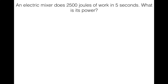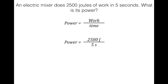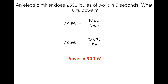Let's do a practice problem: You have an electric mixer that does 2,500 joules of work in five seconds — what is its power? Formula: P = W / t. Substitute: P = 2,500 J ÷ 5 s. The power is 500 watts. Add this to your graphic organizer: power is how much work is done in a period of time, and it's P = W / t.